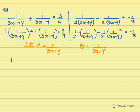After substituting, we get 1 times a plus 1 times b, which is equal to 3 by 4. So I have 1a plus 1b equals 3 by 4.